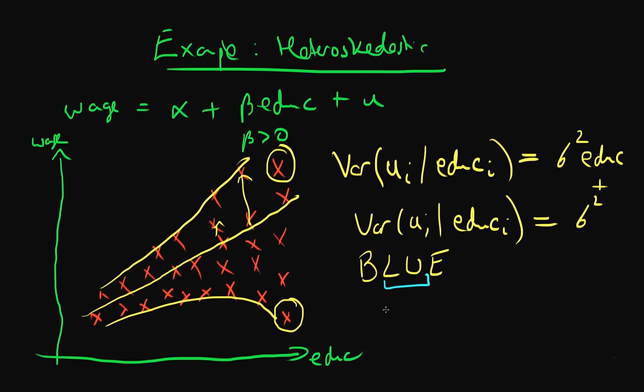Things which we call weighted least squares or generalized least squares, which are also unbiased and linear, but are better. They have a lower sampling variance.